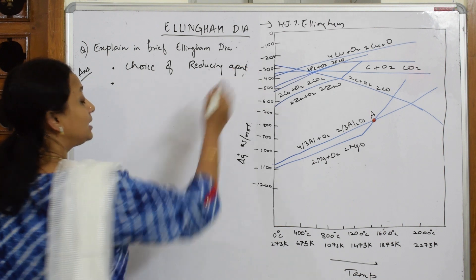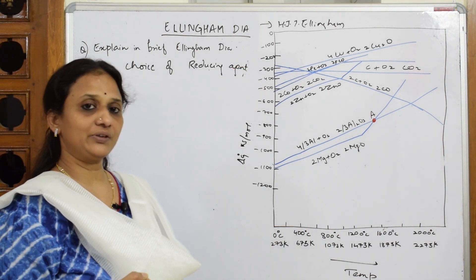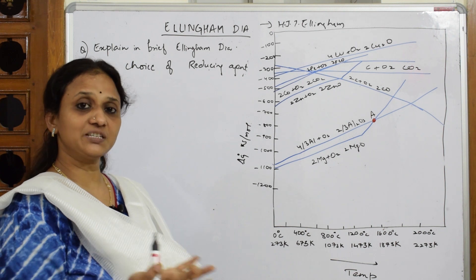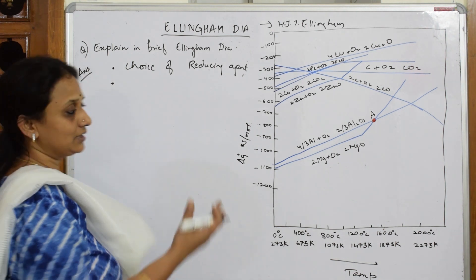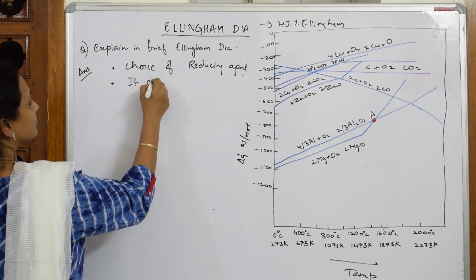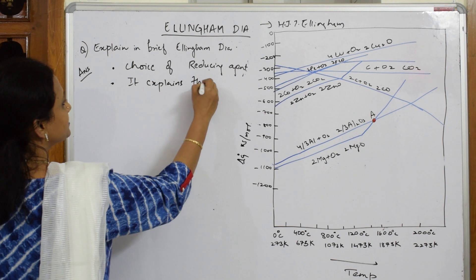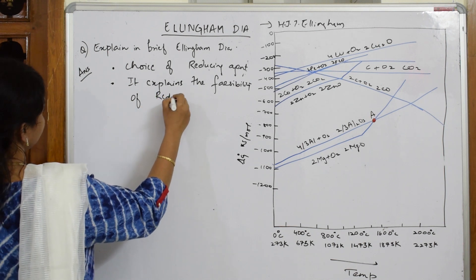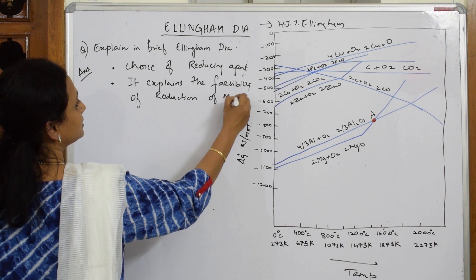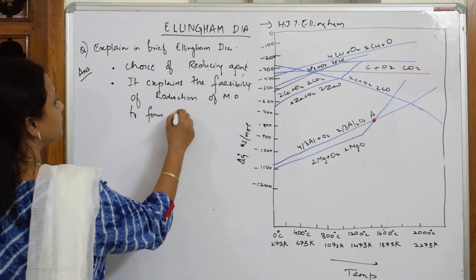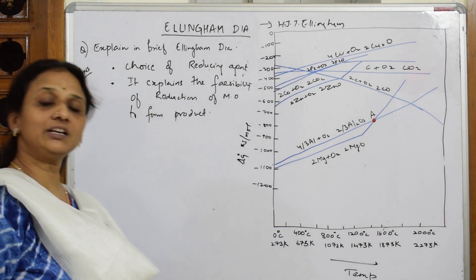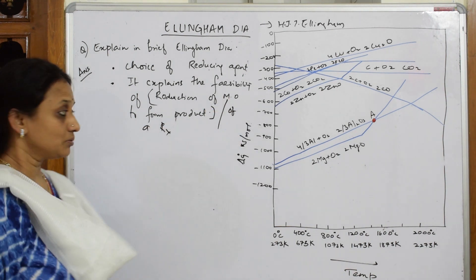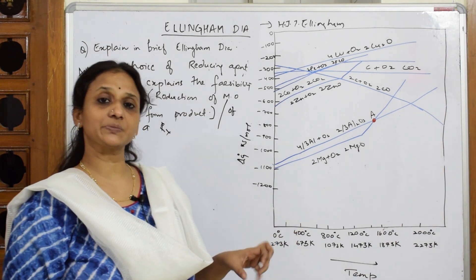The next important thing: the Ellingham diagram will also tell us whether a reaction is feasible or not — will the reaction proceed in the forward direction, or will product formation stop at a particular point? So it explains the feasibility of reduction of metal oxide to form product. Simply put, it explains the feasibility of a reaction.